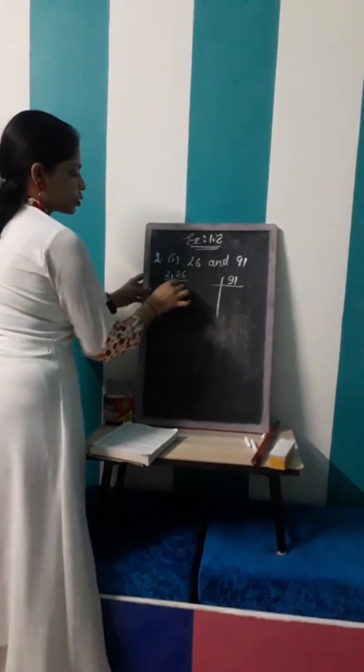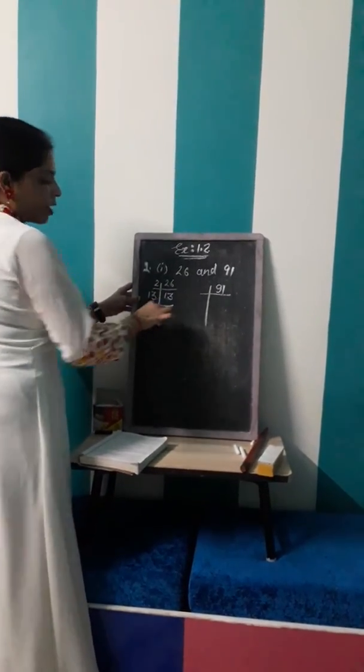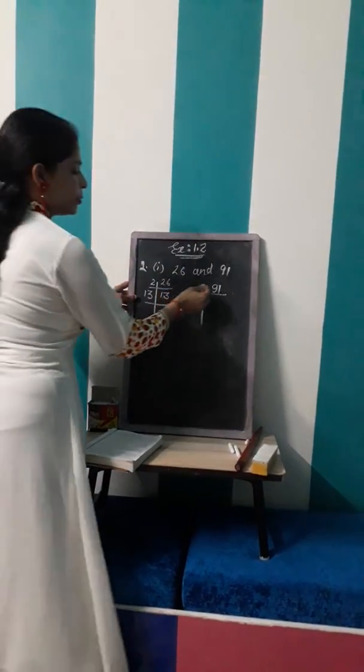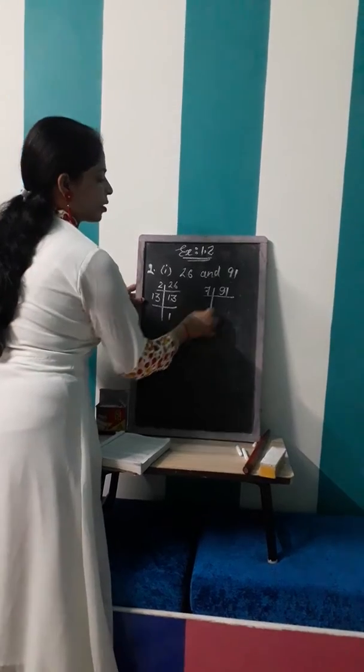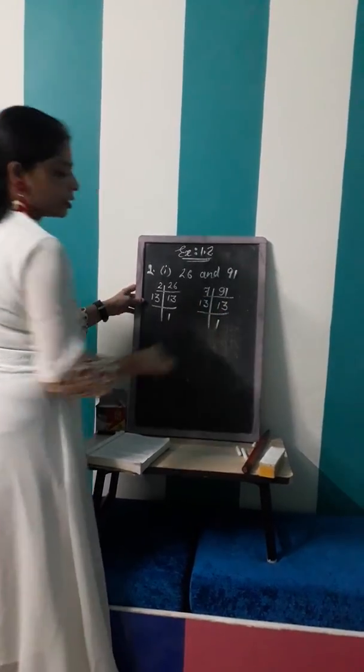To find the prime factorization, we will start by 2, it will go by 13. So again 13, we have 1. Similarly, at 7 and at the 13, so 13 is a divisible there, right?